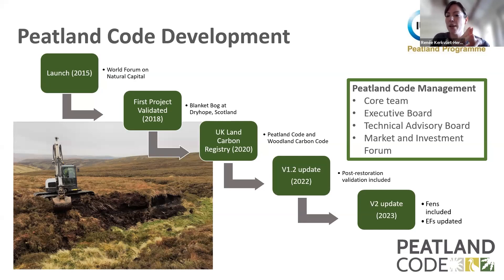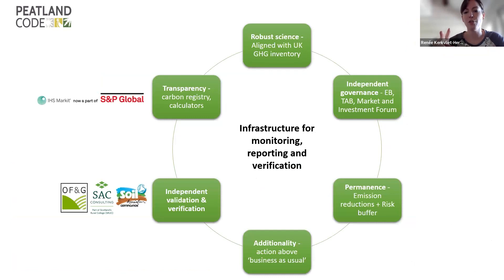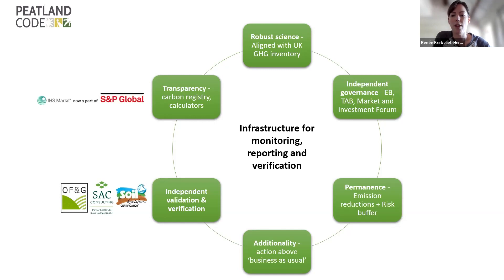Just a little bit on the Peatland Code management — we've got a core team, an executive board, a technical advisory board, and a market and investment forum behind us to make sure it's robust from all aspects. This is the infrastructure for monitoring, reporting, and verification. It's really important that all these bits are in place to have a high-integrity standard. We are based on robust science and aligned with the UK Greenhouse Gas Inventory. Part of version 2 was updating the emission factors to realign again. Independent governance is really important — we've got that governance with the executive board, technical advisory board, and the forum. Permanence is also key — when you sell offsets it needs to be a permanent emission reduction, so we also have a risk buffer in place.